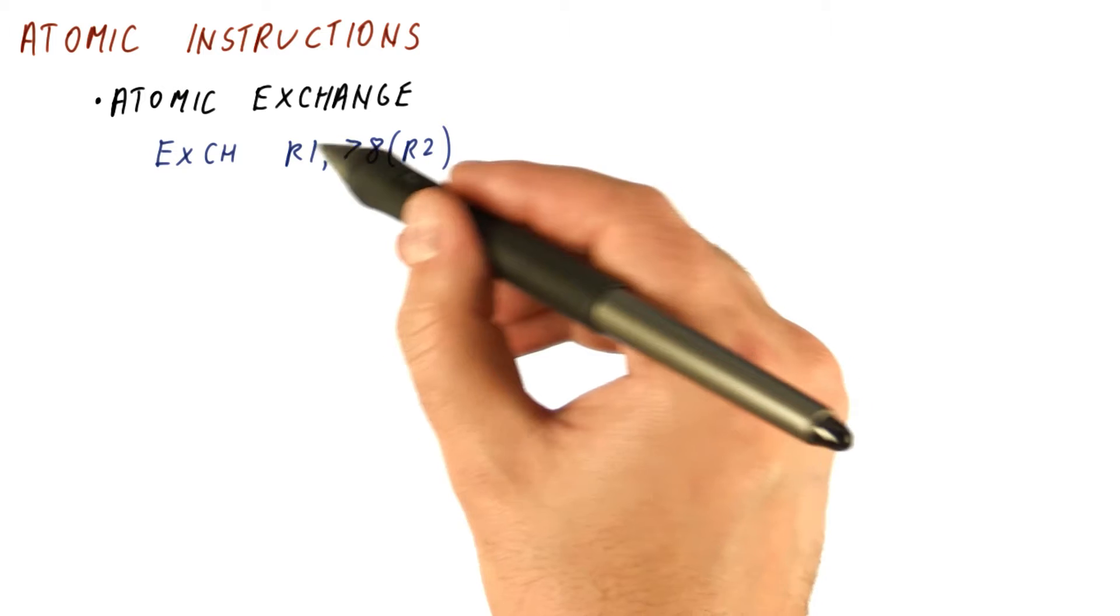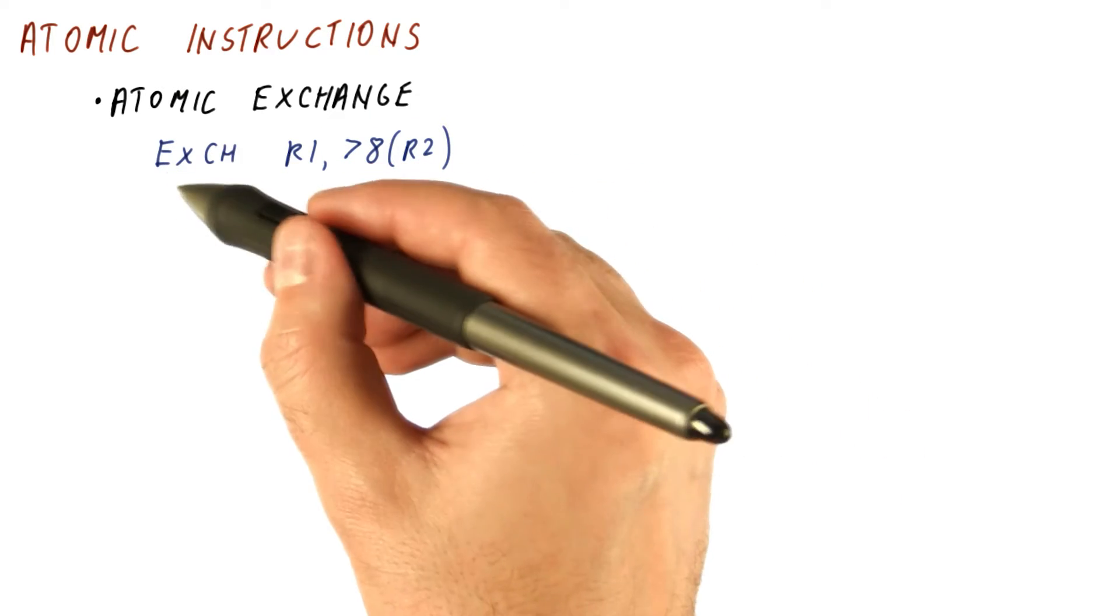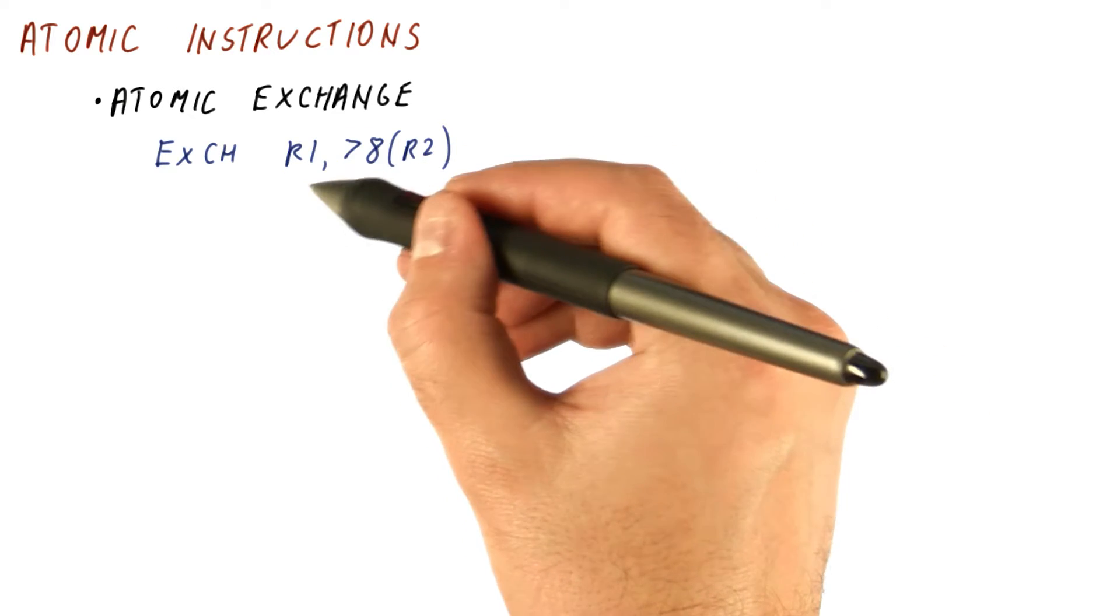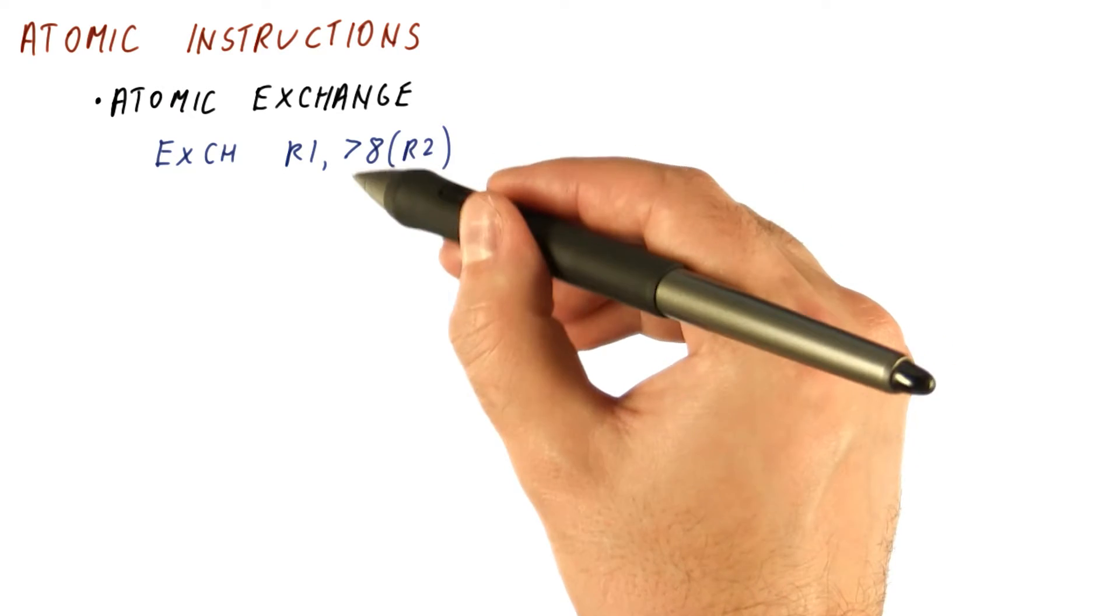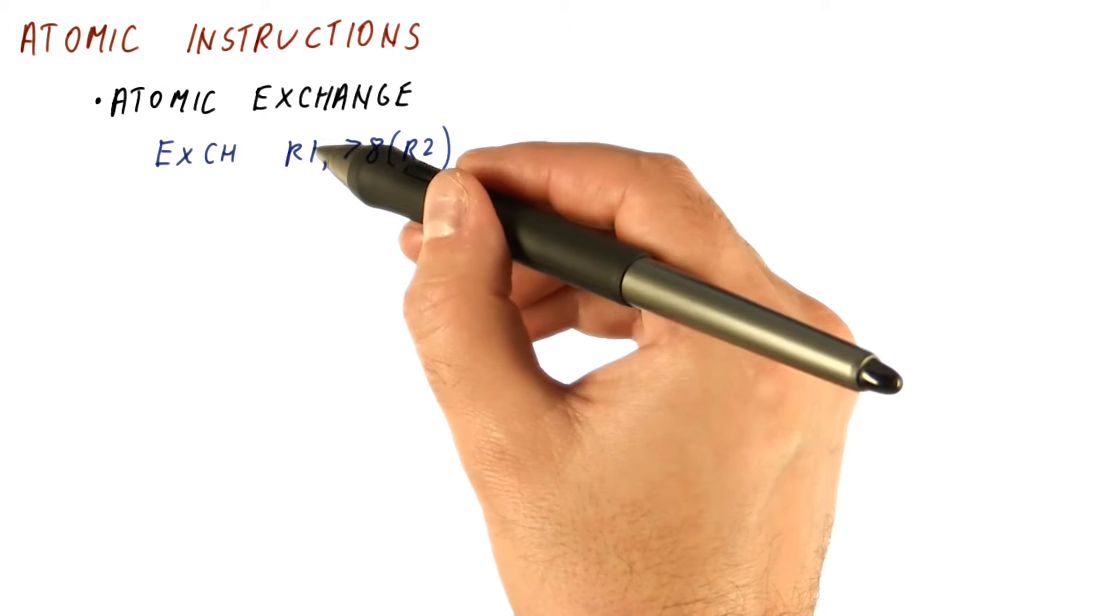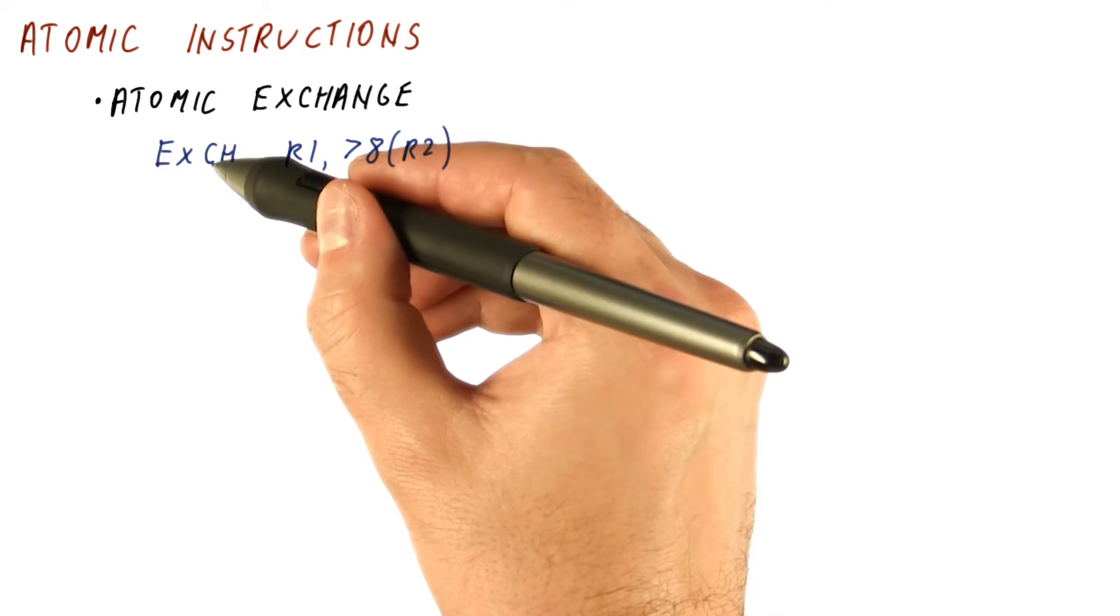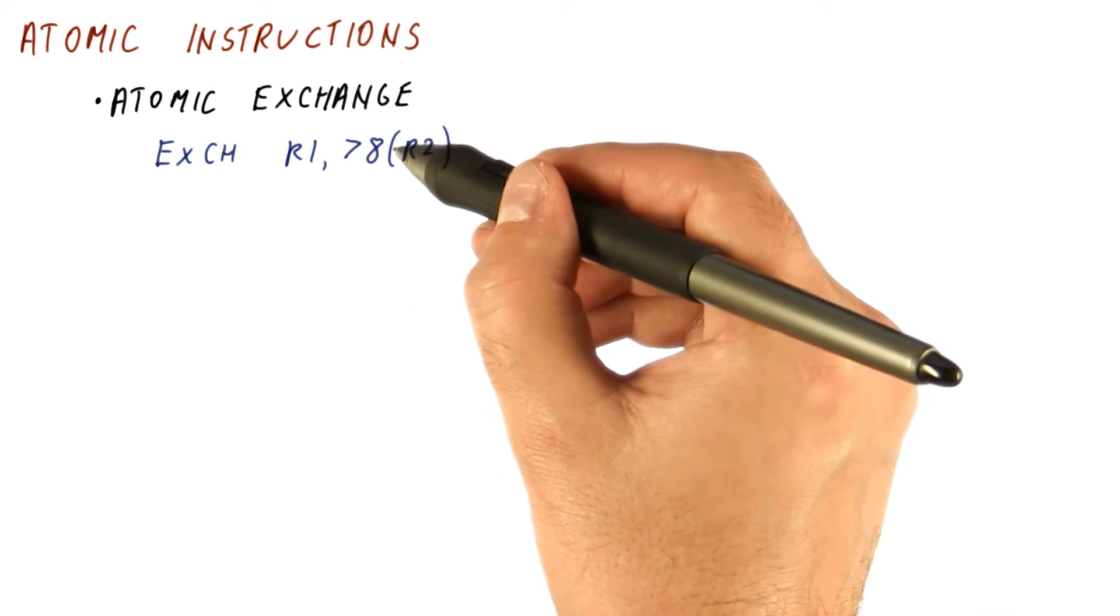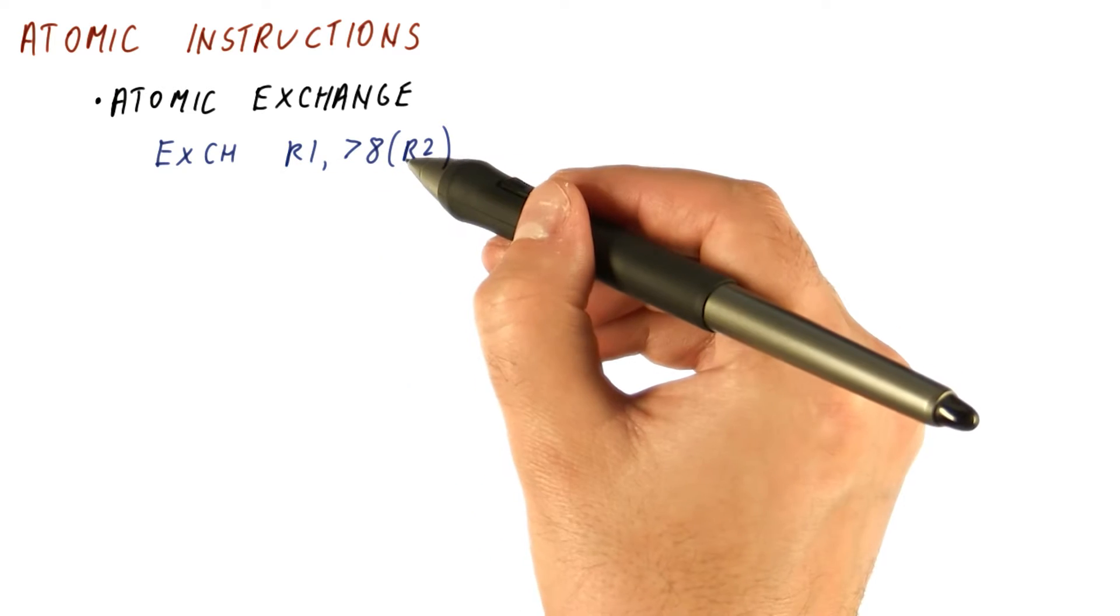The parameters for this instruction look like the parameters for a load or a store, but what an exchange does, it does both a load and a store at the same time so that it swaps the content of R1 with the contents of the memory location that it addresses. So a load would read this and put it in R1. A store would take what's in R1 and put it here. An exchange swaps the contents of the two. So the register gets what was in the memory location, and the memory location gets what was in the register.